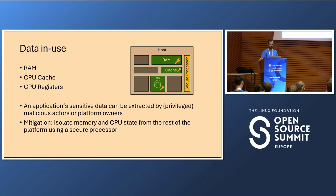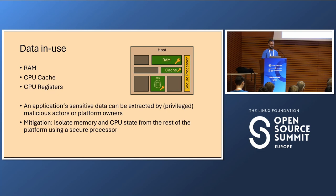Securing data in use isn't pinned to a certain CPU or cache. It has to be built into the processor itself — so that when doing interrupts, certain data is evicted and not accessible to neighbors or cloud hosters. The threat is from platform owners but also malicious actors who hack the platform. The mitigation is to isolate memory and all CPU states from the rest of the platform, which requires a secure processor piece of hardware to perform this.